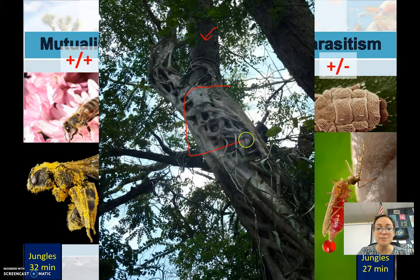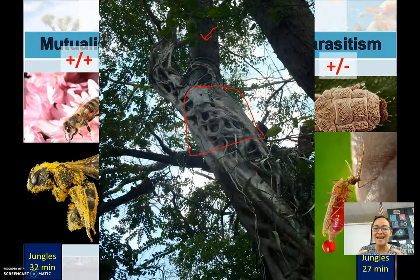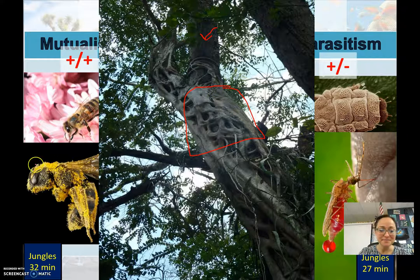The strangler fig is actually a vine or another plant that grows around a normal tree. It's basically going to suffocate the tree inside, eventually killing it, and then takes its place. That's an example of parasitism between two different plant species, which is really cool.